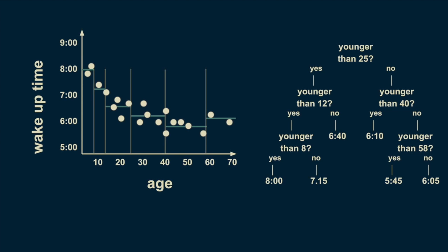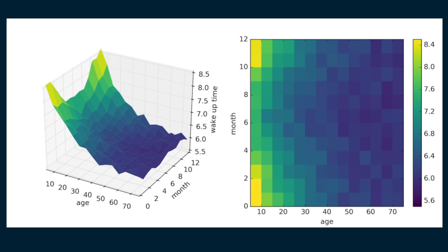We can also extend this regression tree example to have two predictor variables. If we consider not only someone's age, but the month of the year as well, then we can find even richer patterns. In North America, days are longer in summer months, and it gets lighter earlier in the morning. In this completely unrealistic example, children and teens are unburdened by the rigorous schedules of work and school and have their wake-up time driven by when the sun comes up.